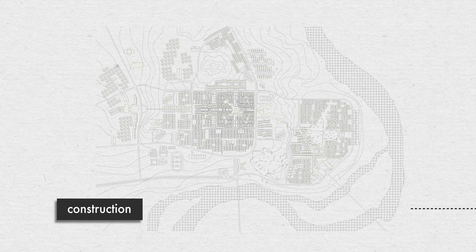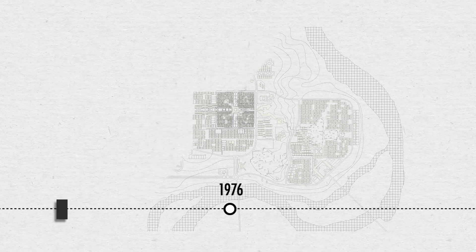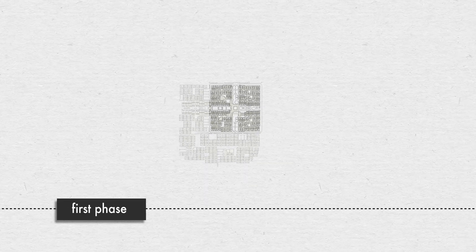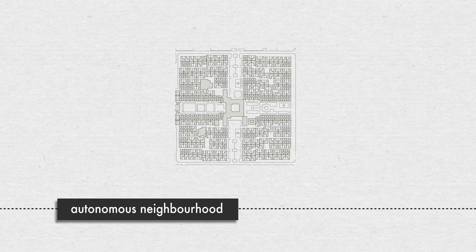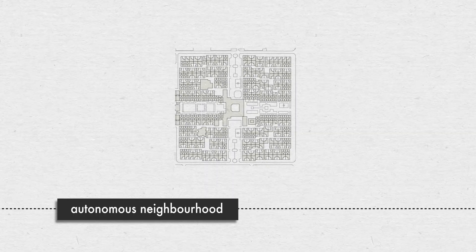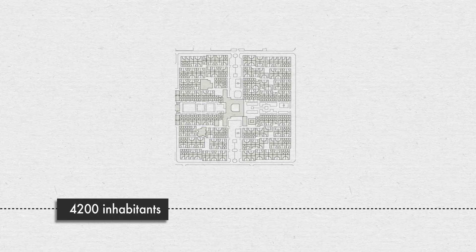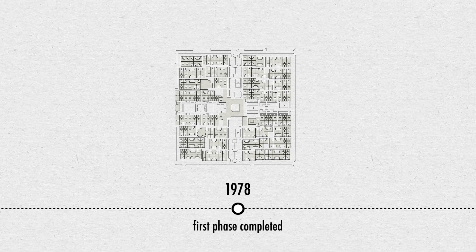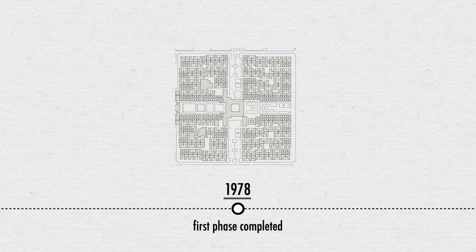Construction started in 1976, and part of the first phase, which was planned to function as an autonomous neighborhood and to accommodate about 4,200 inhabitants, was more or less completed in 1978.